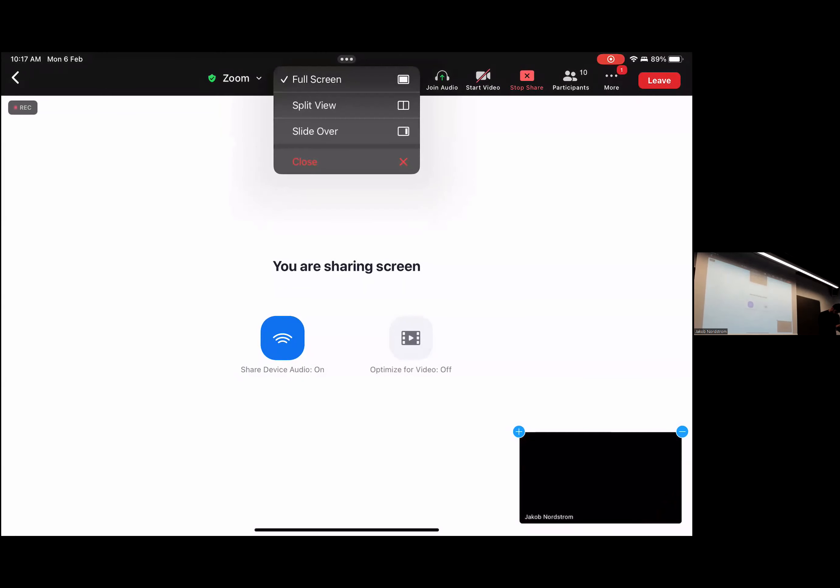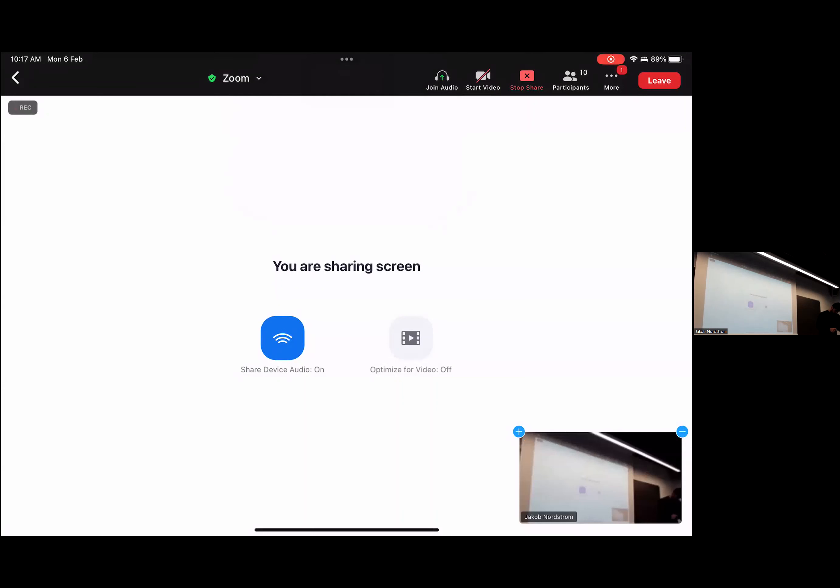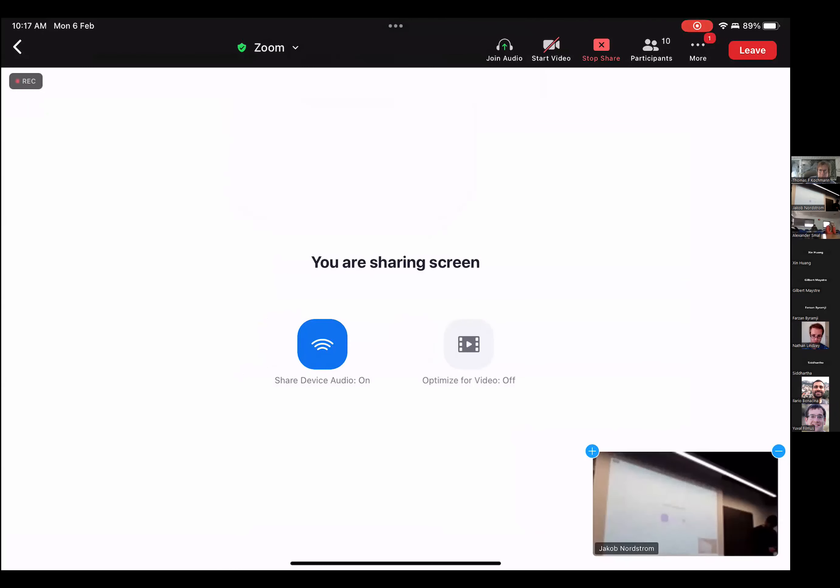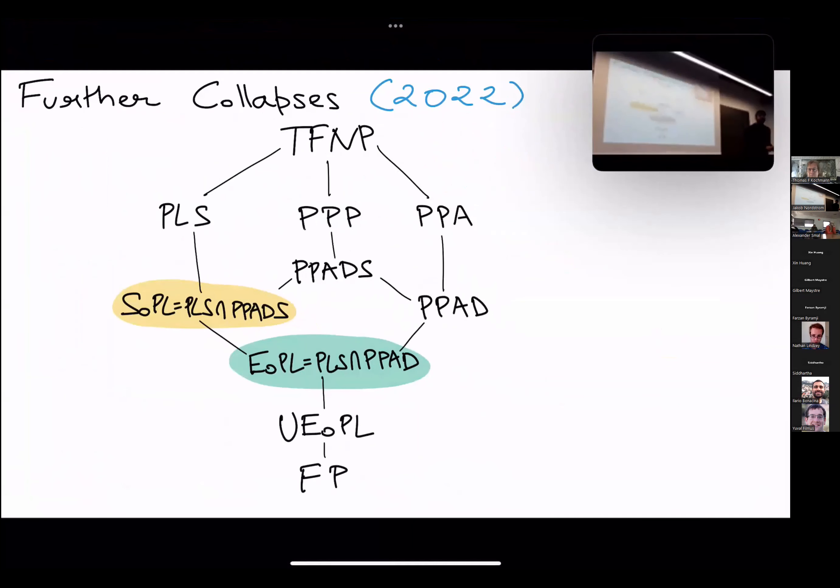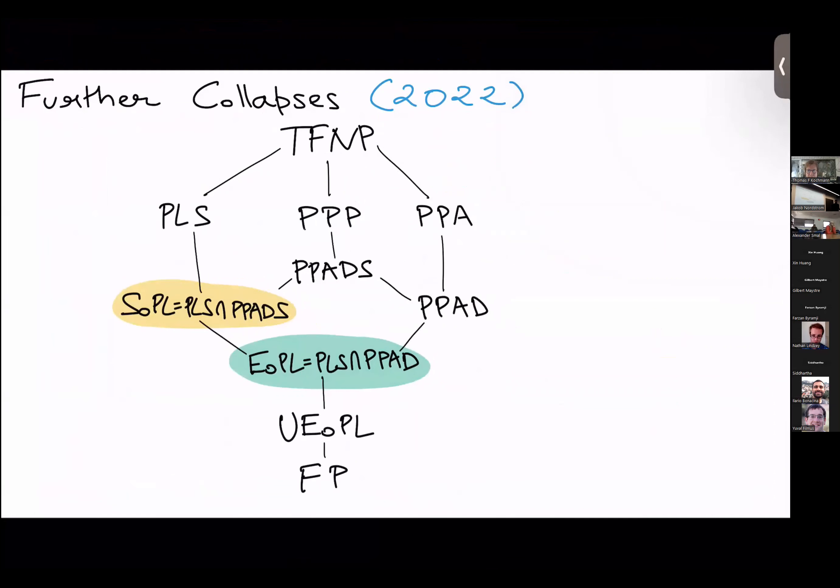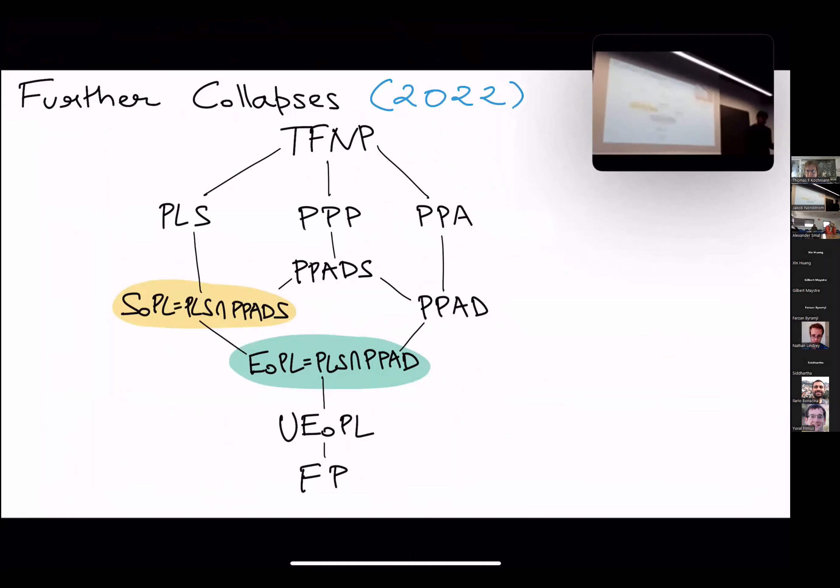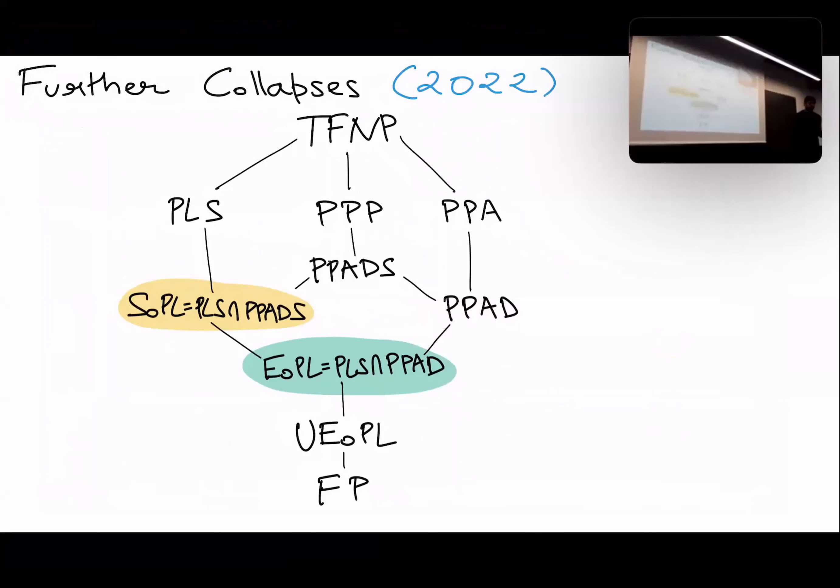Following up on that, the same group, which is the work that I'm presenting to you now, we also noticed that not only does CLS collapse to this intersection, even EOPL collapses to this intersection. So in particular, that implies EOPL is equal to CLS. I also threw in another class here called SOPL. All I will say about it is that SOPL has the same relation to EOPL that sink of line has to end of line.